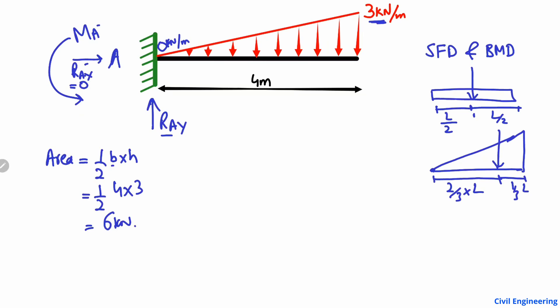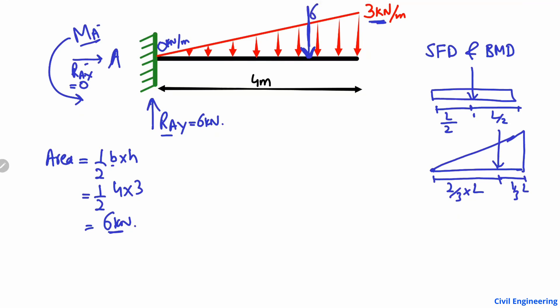So the total load is 6 kilonewton acting on this beam, supported at the fixed support — that is our support reaction. Now we need to find the moment at point A, and for that we need the centroid location. The 6 kilonewton acts as a concentrated load at the centroid — it is no longer a distributed or varying load.